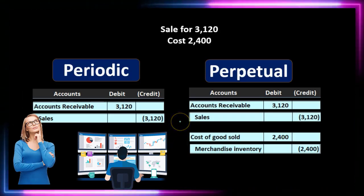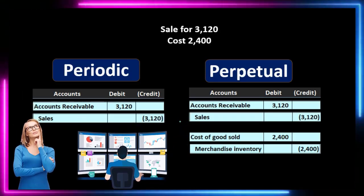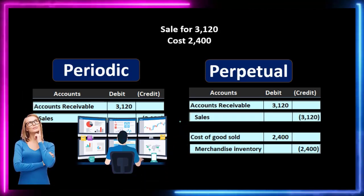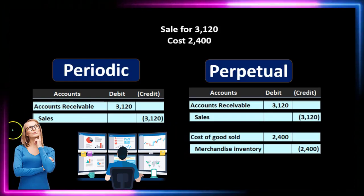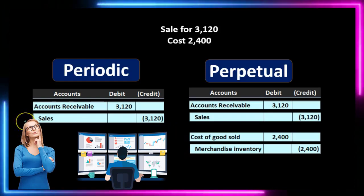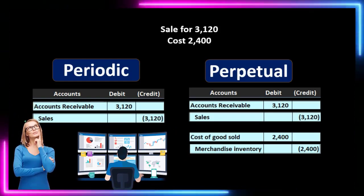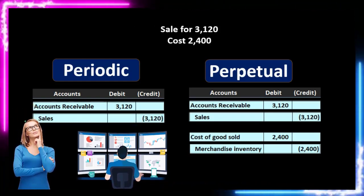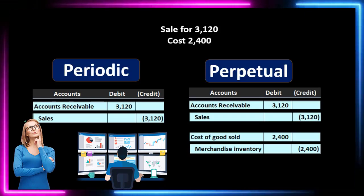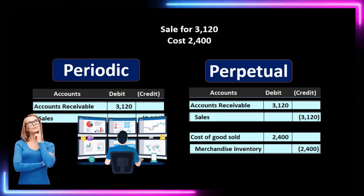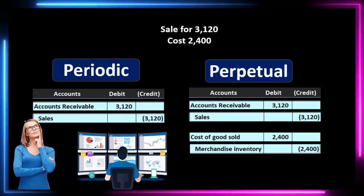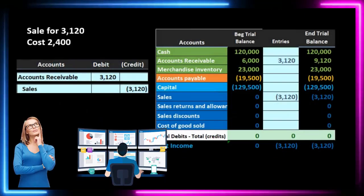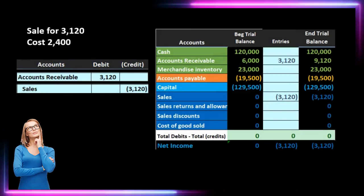Under a perpetual system, we can track the inventory going down and the related cost of goods sold as we go, showing us where we stand at any given point in time. The periodic system only gives us partial information until we do the adjustment at the end of the month, week, or whatever period we are working with.